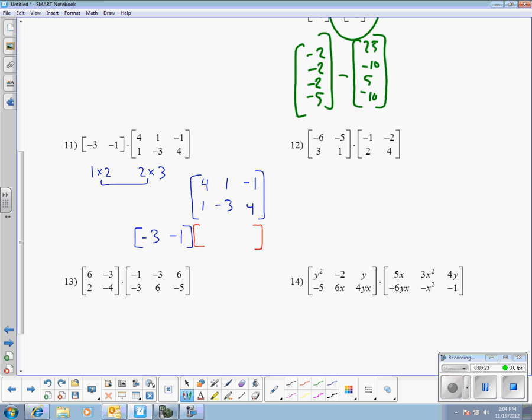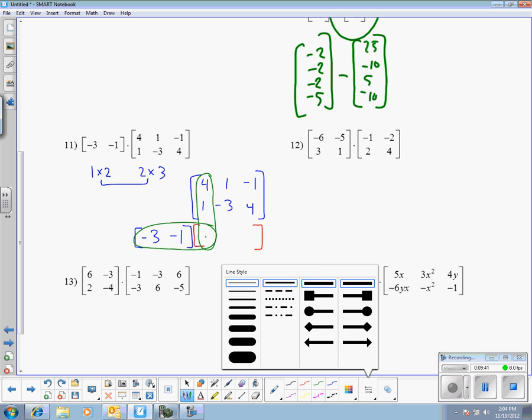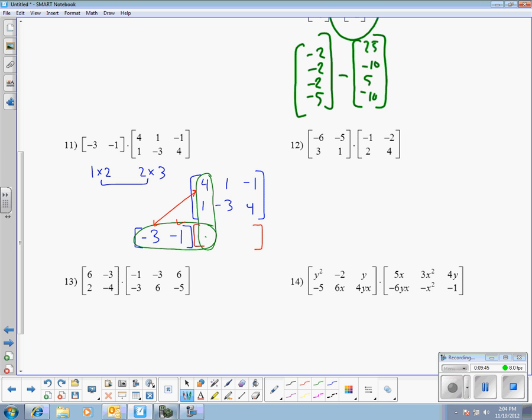All right, but every number in the answer is going to come from the intersection of the row and column. This column needs to intersect with this row to give us this number. So how do we come up with a number? Well, the number is, in this case, negative 3 times 4, negative 1 times 1. Add those two numbers together and see what you get. So I get negative 12 minus 1 is negative 13. It's the negative 3 and the 4, those two locations multiplied together, plus the other two multiplied together. So what's going to be here in the next slot is going to be negative 3 times 1, which is negative 3. Negative 1 times negative 3, which is positive 3. Negative 3, positive 3, adds up to 0. And then I get 3 minus 4 is negative 1. So those two matrices multiplied together to give me negative 13, 0, negative 1.